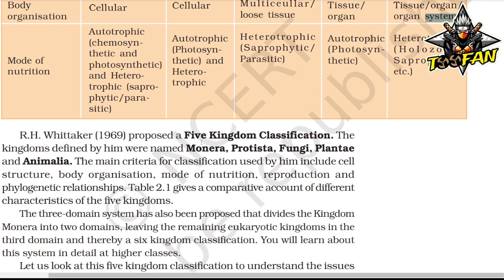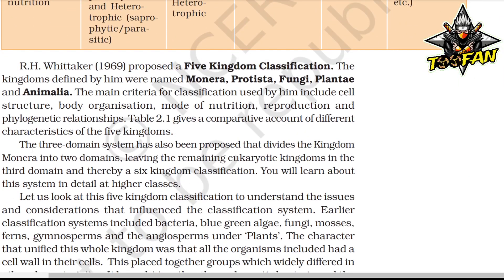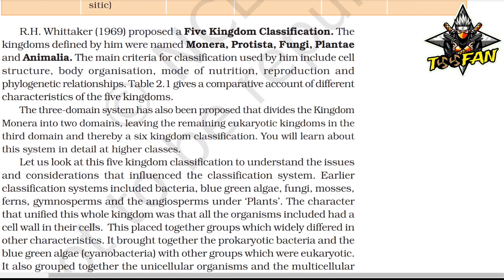R.H. Whittaker (1969) proposed a five kingdom classification. The kingdoms defined by him were Monera, Protista, Fungi, Plantae, and Animalia. The main criteria for classification used by him include cell structure, body organization, mode of nutrition, reproduction, and phylogenetic relationship. A three domain system has also been proposed that divides kingdom Monera into two domains, leaving the remaining eukaryotic kingdoms in a third domain, giving a six kingdom classification.